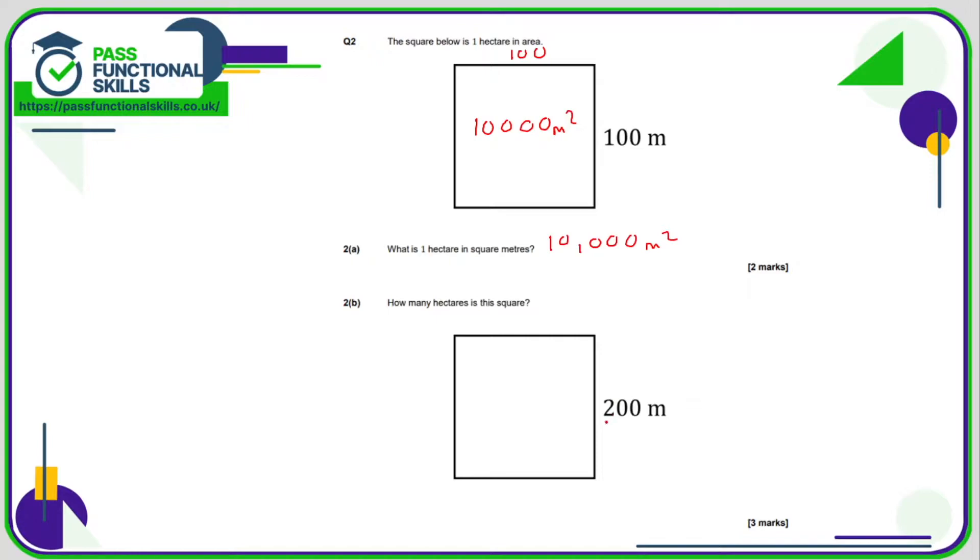So how many hectares is this square? Now we can see it's twice as big, so you probably think, oh, it must be two hectares, but that would be wrong. Let's work out the area in terms of square meters. 200 times by 200.